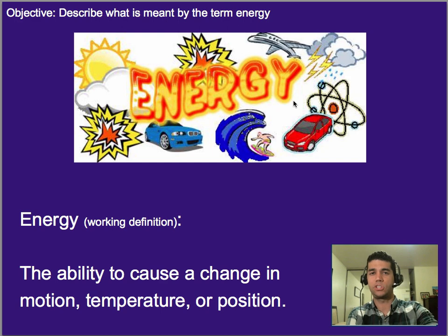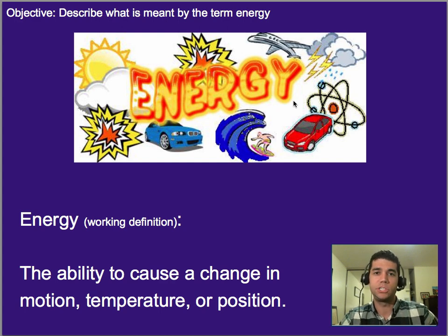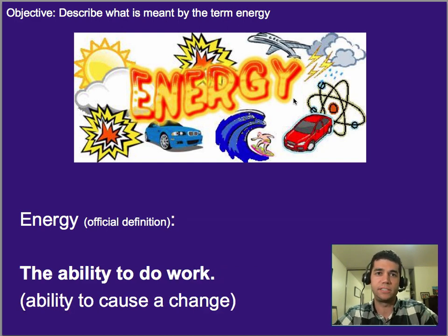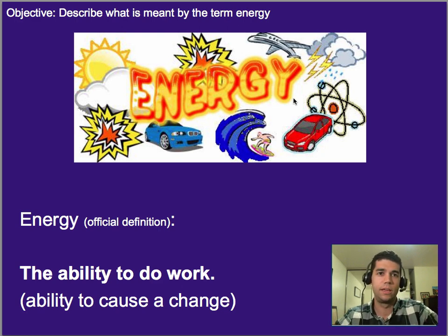We started with that working definition, and we talked about kinetic energy being energy of motion, and potential energy being the idea that something could eventually start moving because it's being pulled on. We won't talk too much about temperature right now, but we'll get into that next unit. That was a working definition, not the official definition. The official definition of energy is the ability to do work. Some people don't like this because it seems circular — work is a change in energy, and energy is the ability to do work. So sometimes I like to think of energy as the ability to cause change.